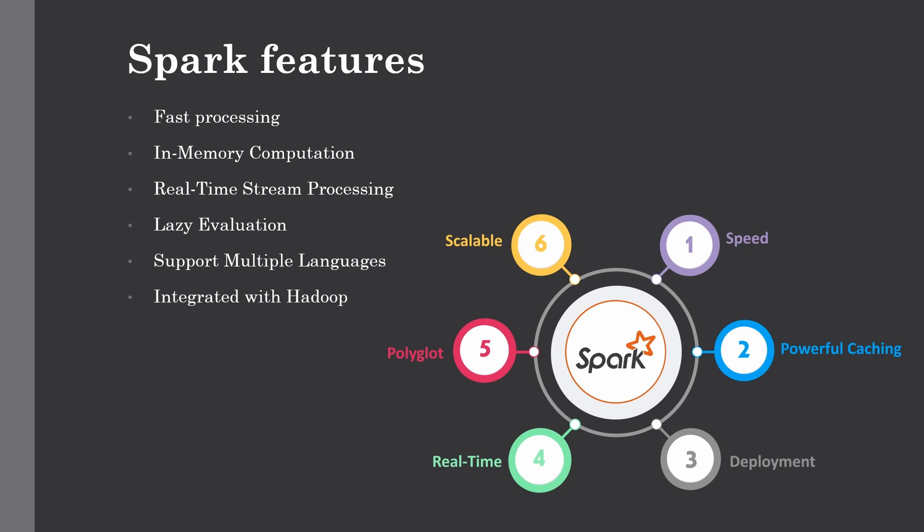The next feature is lazy evaluation. When you perform different transformations on data, Spark will not calculate or process each transformation immediately — it will only plan the operations and execute them all when you call an action in your Spark code. Different actions include count, collect (which returns the entire DataFrame or RDD), as well as take, top, countByValue, reduce, fold, and aggregate. Until you call an action, Spark will not execute anything and just does its planning.